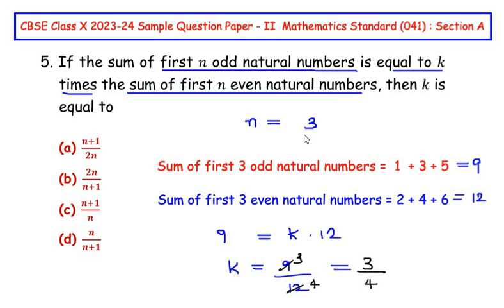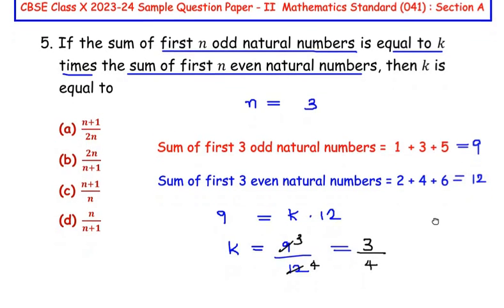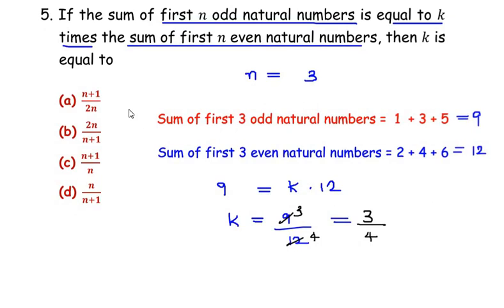Let us see which of these options gives us k equal to 3/4. Let's start with the first option. Here n is 3, so (3+1) is 4 over (2×3) which is 6. So 4/6 simplifies to 2/3, but we need 3/4, so A is not our answer.